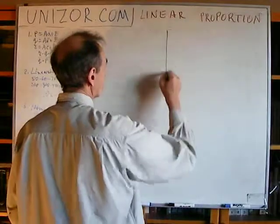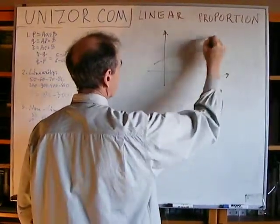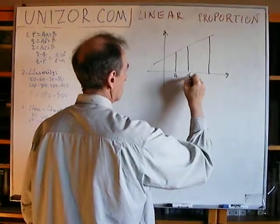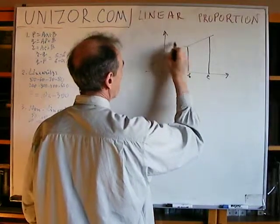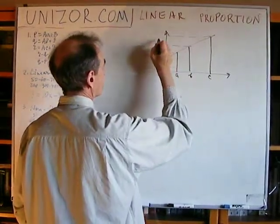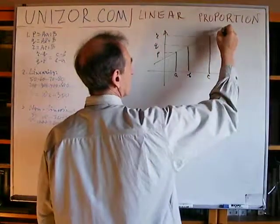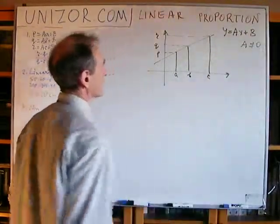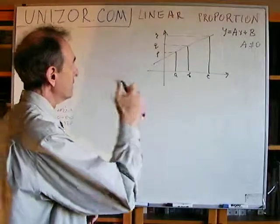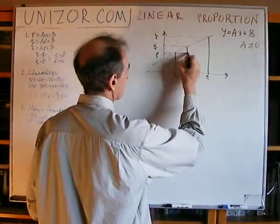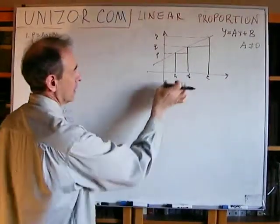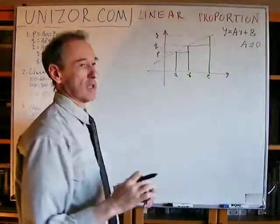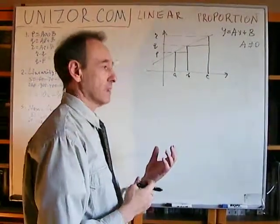So, if you have a straight line which represents the graph, I will take three points A, B, and C, with values P, Q, and R, and the function is Ax plus B, where A is not equal to zero. Now, what I mean is that these are increments of argument. These are increments of the functions, the function value.